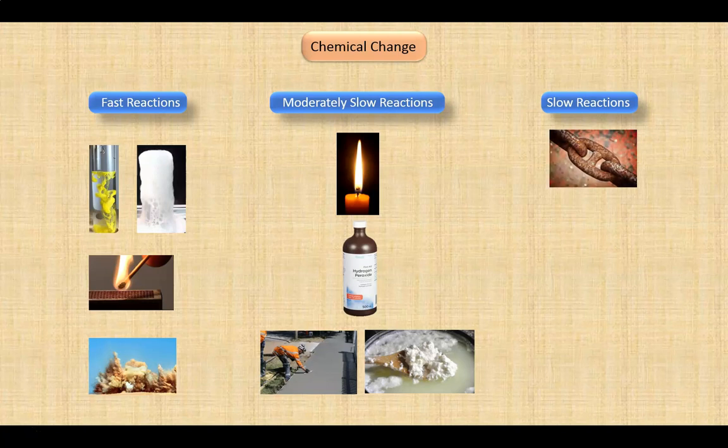Under slow, we have rusting, which is too slow to observe taking place. We see the results over longer periods of time. The fermentation process that produces alcohol is also slow, taking two to three weeks.